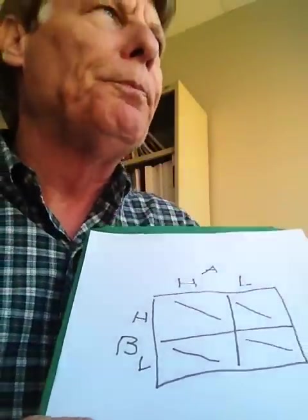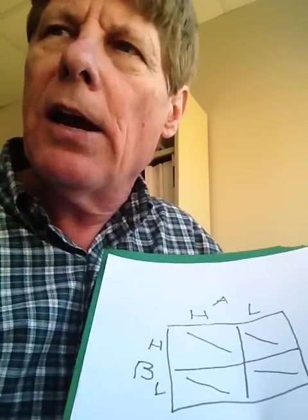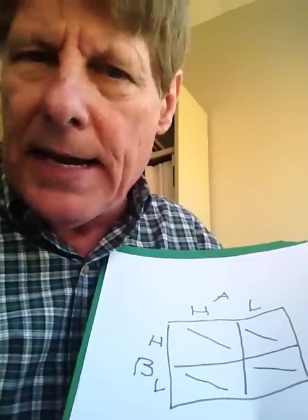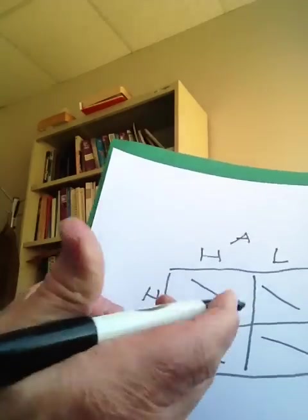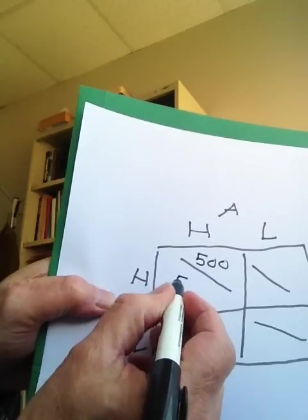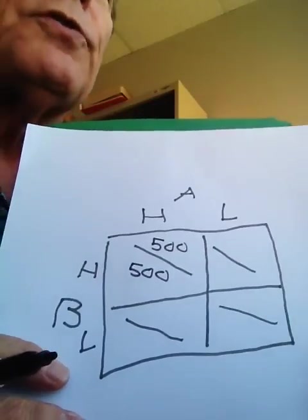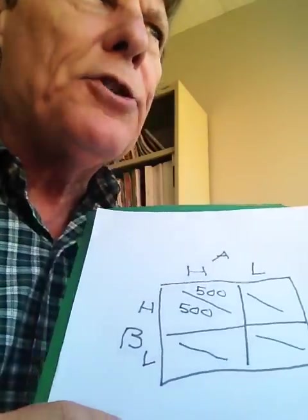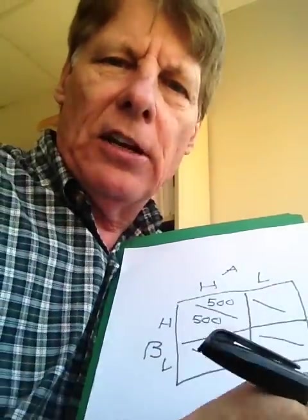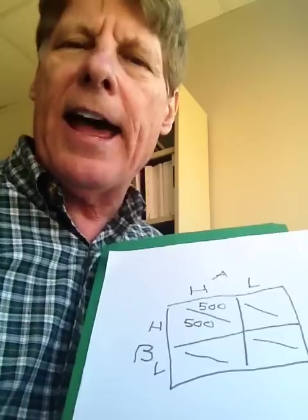Let's make the following assumption. Suppose that if both companies charge a high price, they will make $500 profit per period. Whether a period is a day, a week, a month, or a minute, it doesn't really matter per period. So, here in this box will be $500 and $500. That's what both will get if they both charge a high price. Now, let's again make another assumption. Let's suppose if one company reduces its price by 20%, it can steal half of the other company's business. Lowering the price by 20% can steal half the other company's business.